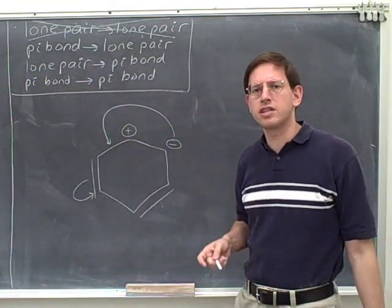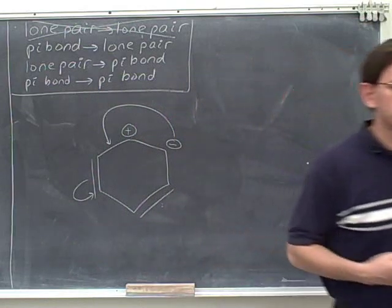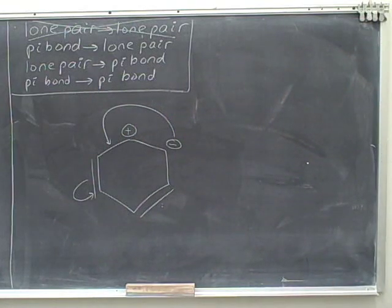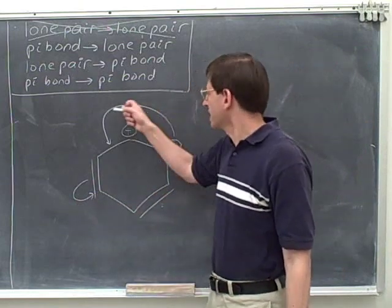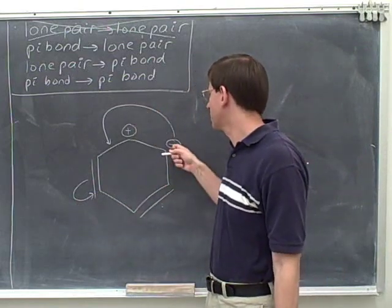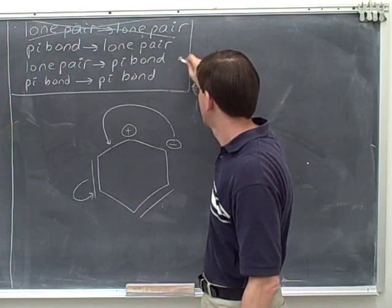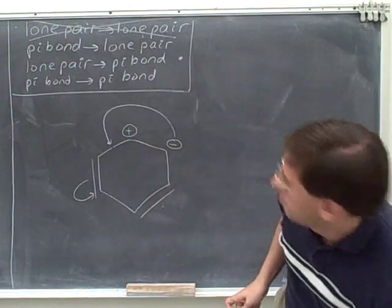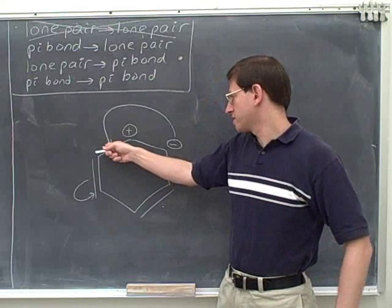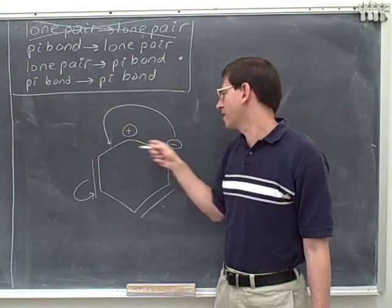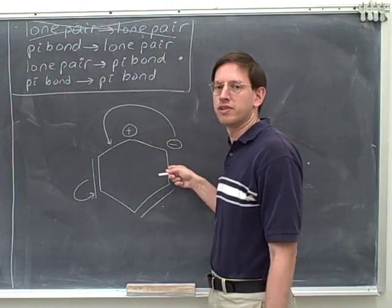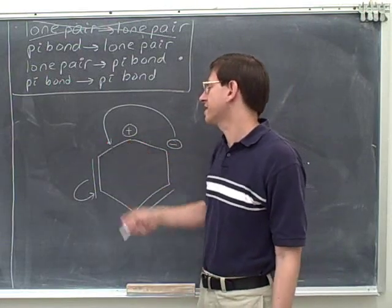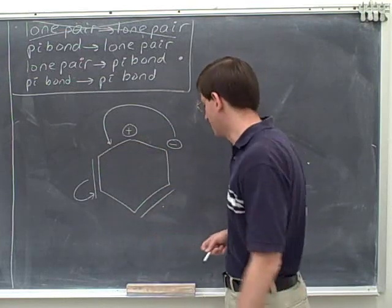I'm trying to decide whether these arrows satisfy the as close as possible rule. This arrow is fine, but this arrow is not fine. Here we're taking a lone pair and making a pi bond. But this new pi bond is not as close as possible to the original lone pair. How could we put a new pi bond closer to the original lone pair? It would have been closer if we put it over here, or over here. That means that this is not a good arrow — we don't want to make that big of a jump.